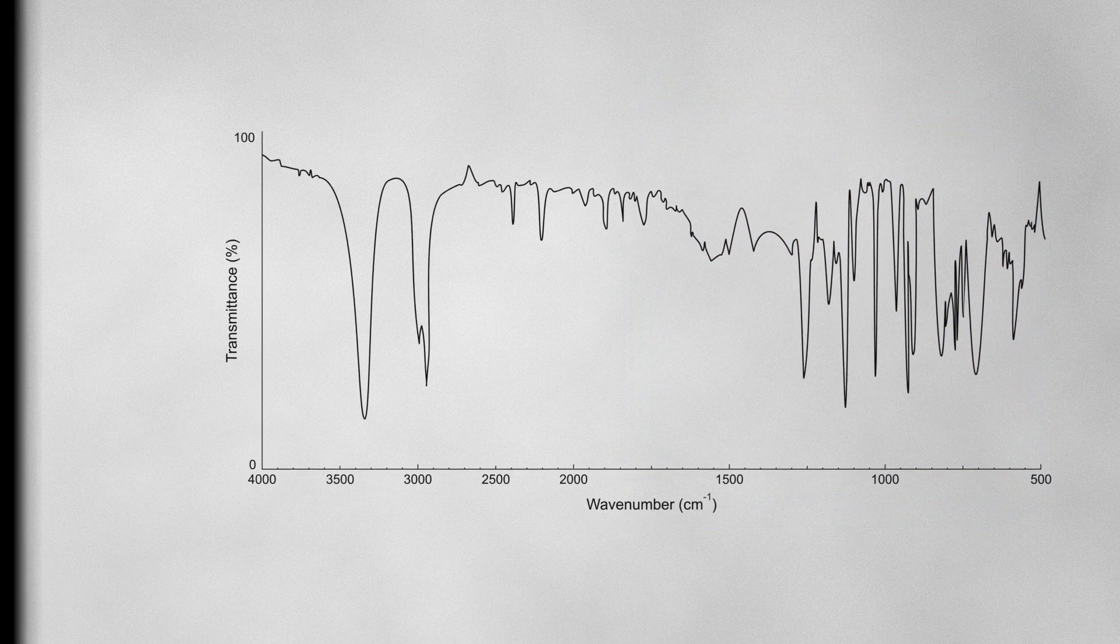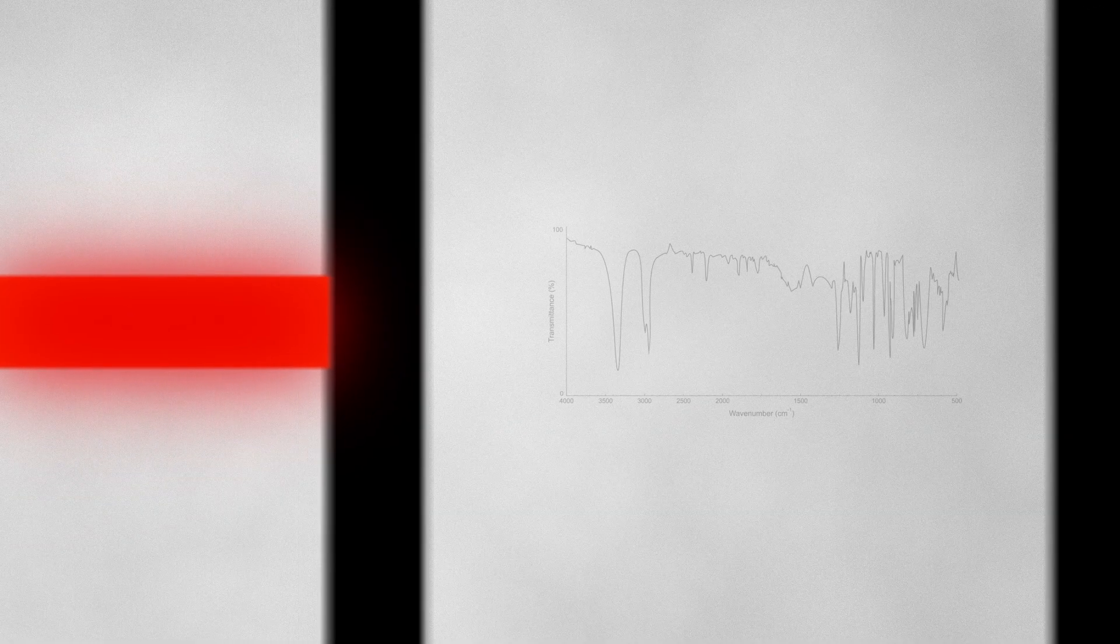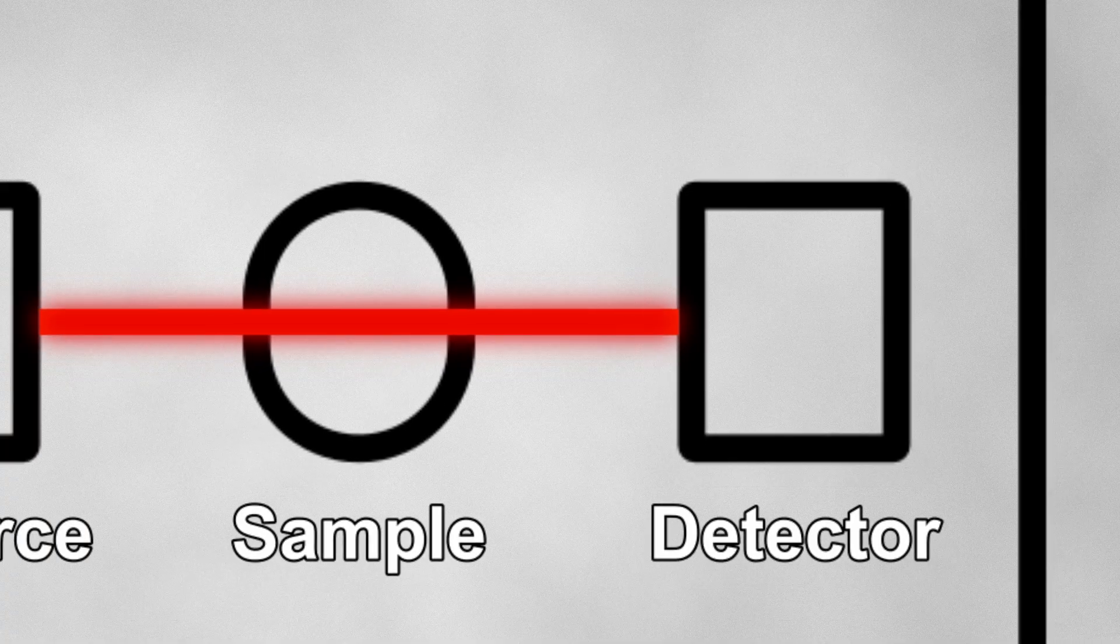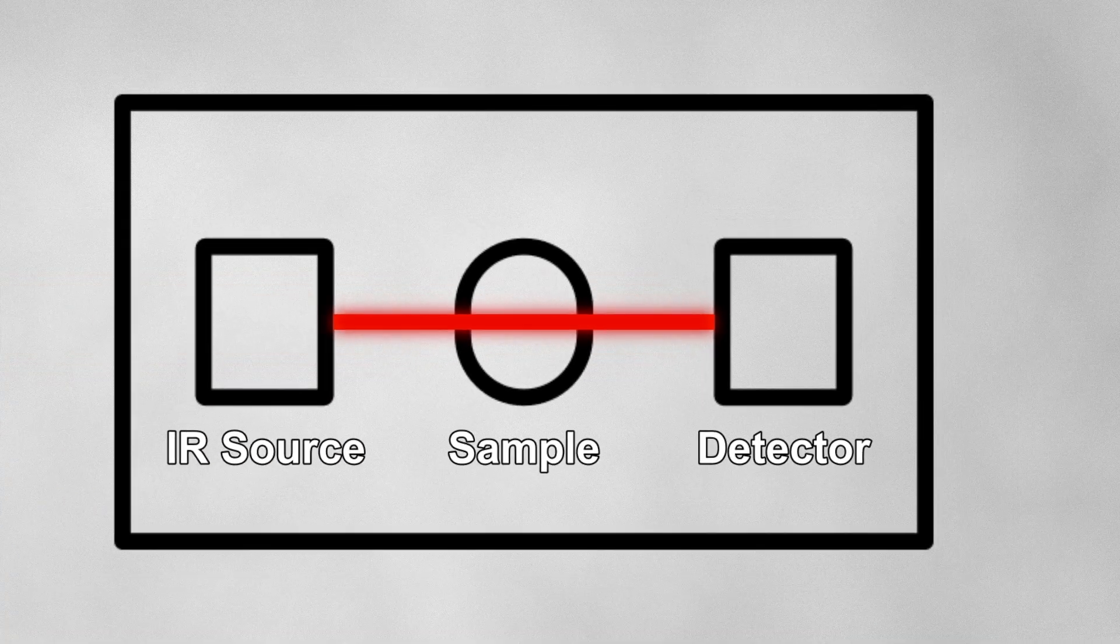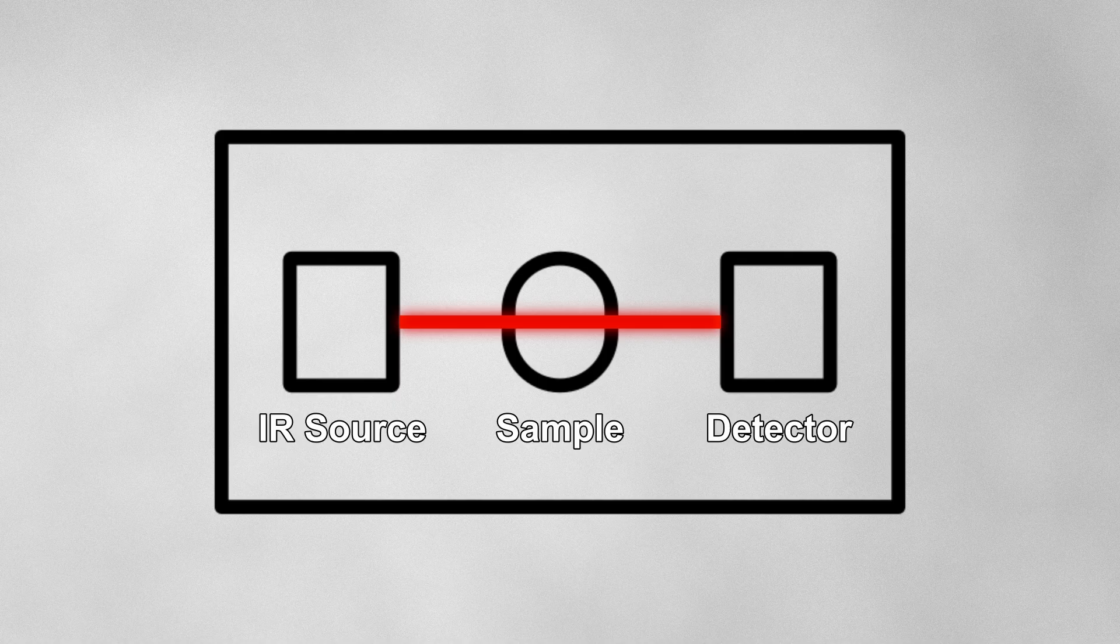So, even though IR spectroscopy doesn't really give us structural information in the same way NMR spectroscopy or mass spectrometry does, it gives us a lot of information about any functional groups present. This, combined with analysis of the fingerprint region, can help us quickly and easily identify unknown samples. If you enjoyed this video and would like to support the channel, please consider subscribing, and make sure to let me know in the comments if you have any questions.